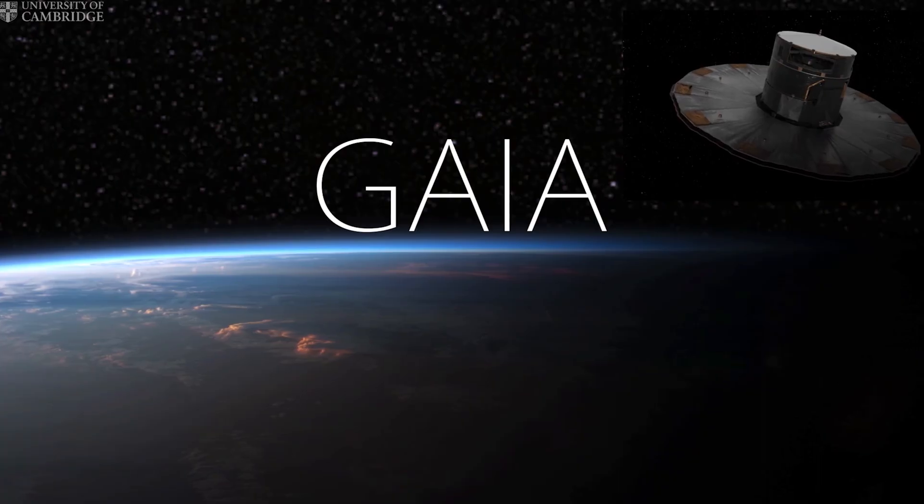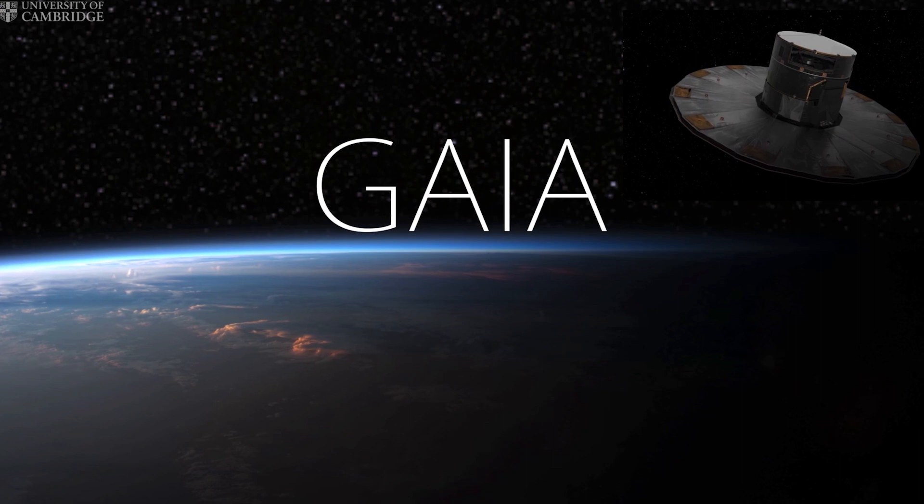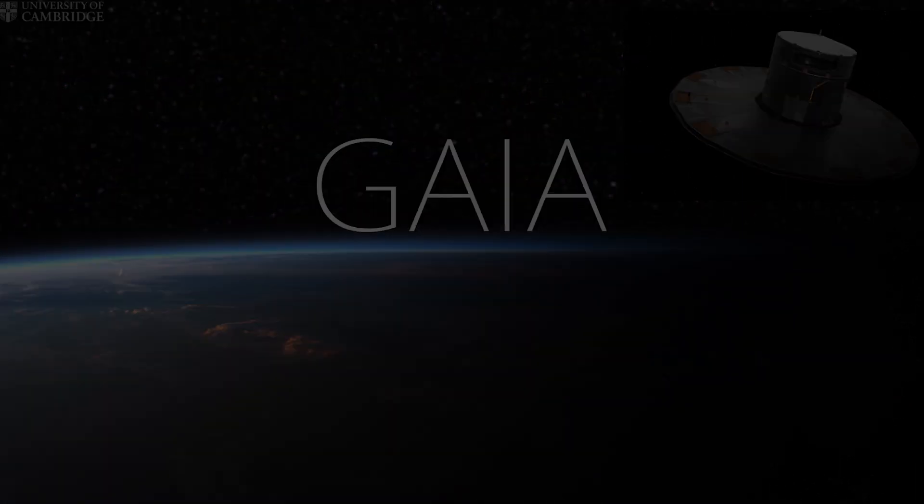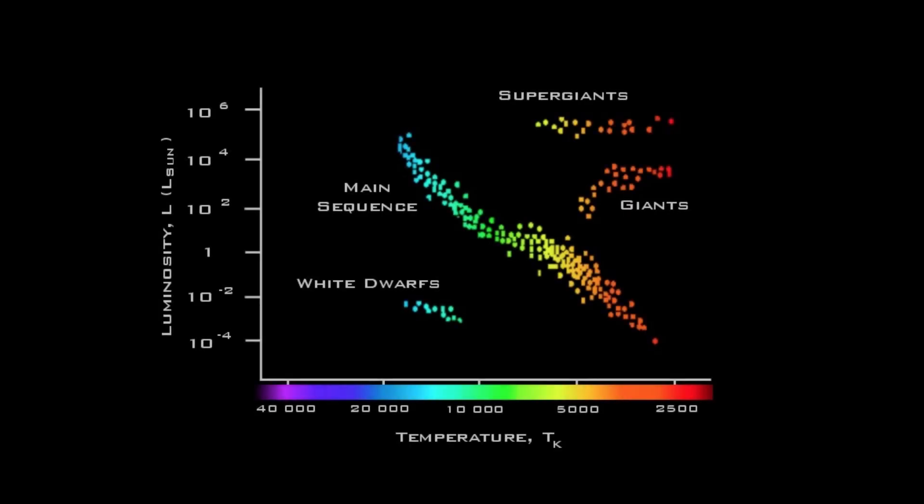Since the project's launch in 2016, it's already made a massive impact on the astrological community. Scientists have used the map to create a version of what's known as the Hertzsprung-Russell diagram, a chart that can help us understand how galaxies evolve in the first place.